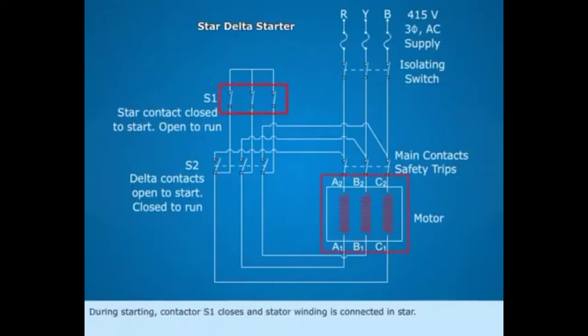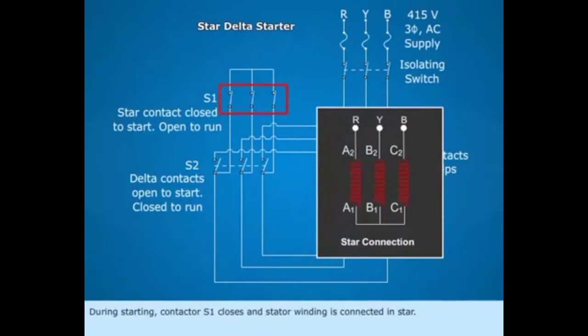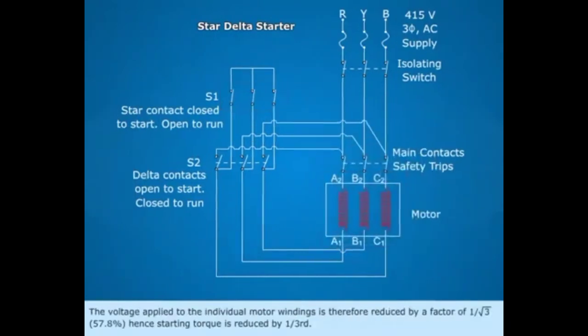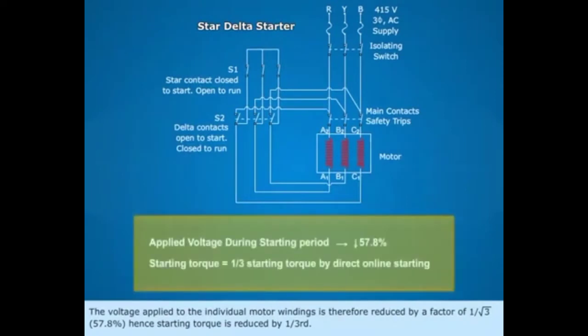During starting, contactor S1 closes and stator winding is connected in star. The voltage applied to the individual motor windings is therefore reduced by a factor of 1 by root 3, 57.8%.